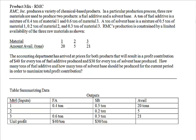When you first start on a problem, it's a good idea to summarize the given data in a table or in a diagram. Here's an example of such a table. We want to make two products: fuel additive and solvent base. The recipes for making these products are given here. To make one ton of fuel additive, we need to mix together 0.4 ton of material 1 and 0.6 ton of material 3.